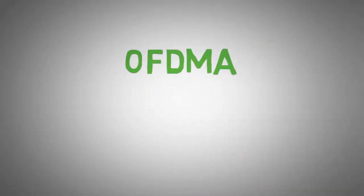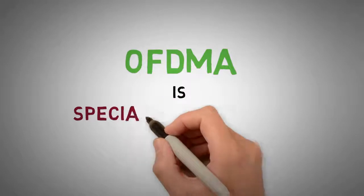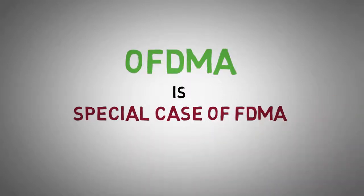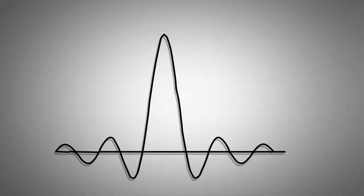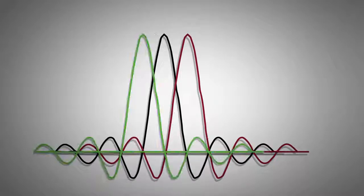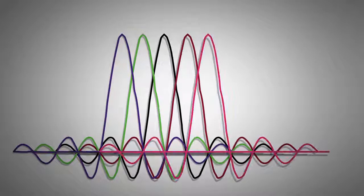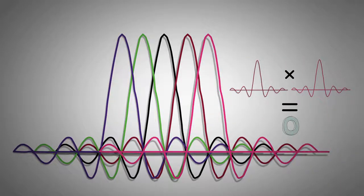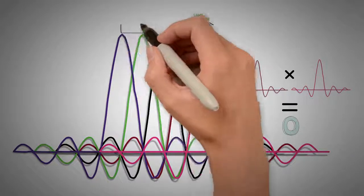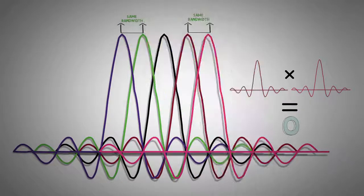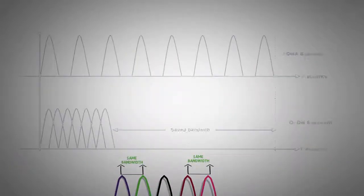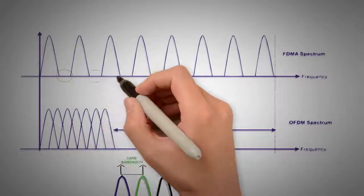OFDMA or orthogonal frequency division multiple access is a special case of FDMA, where users are provided a set of sub-carriers overlapping in frequency domain. However, these sub-carriers are specially designed to be orthogonal to each other, which allows them to occupy the same bandwidth without any interference. This in turn negates the use of guard bands.